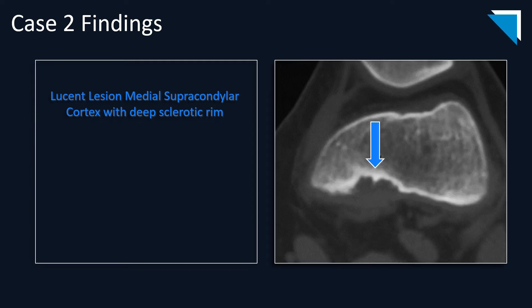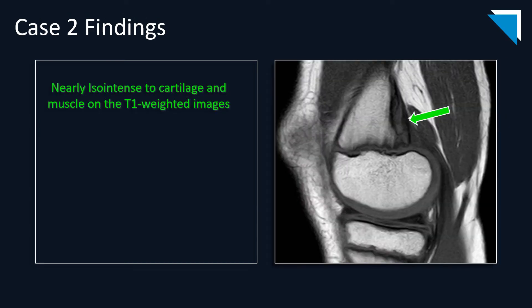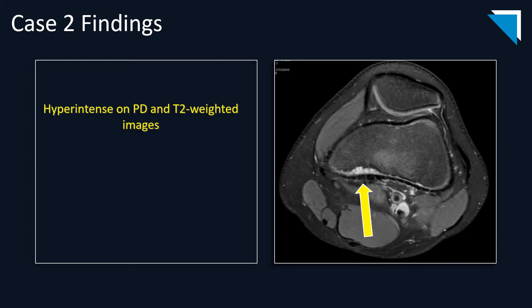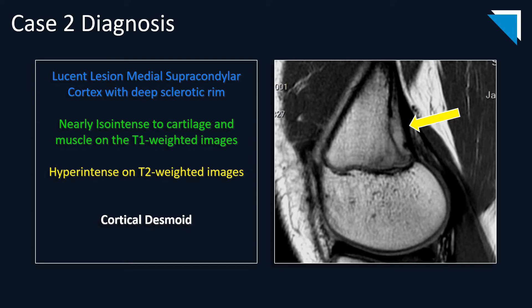On CT, you will see a lucent lesion with a deep sclerotic rim. On T1-weighted MR imaging, this lesion is nearly isointense to cartilage and muscle. On PD and T2-weighted imaging, the lesion will be hyperintense. The diagnosis is a cortical desmoid: a lucent lesion within the medial supracondylar cortex with a deep sclerotic rim on radiographs and CT, nearly isointense to cartilage on T1, and hyperintense on T2-weighted MR imaging.